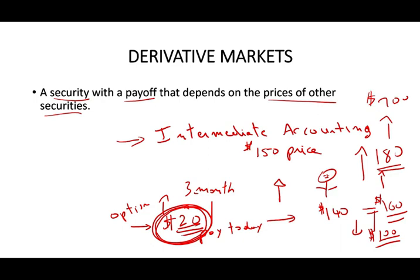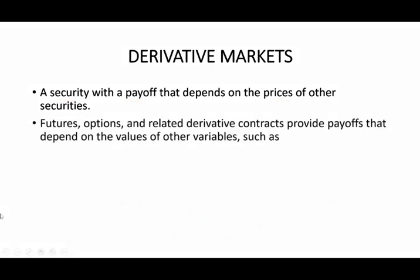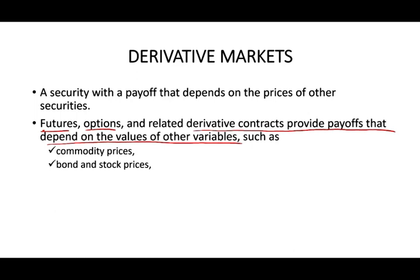In the real world we're not dealing with textbooks — we're dealing with stocks, bonds, interest rates, and commodities. We have derivatives called futures and options. Related derivative contracts provide a payoff that depends on the value of other variables: commodities like wheat, corn, coffee, bonds and stocks, interest rates, or indexes like the Dow, S&P 500, and Nasdaq. You can use derivatives to hedge those positions.